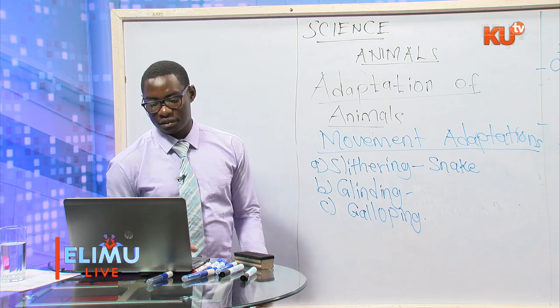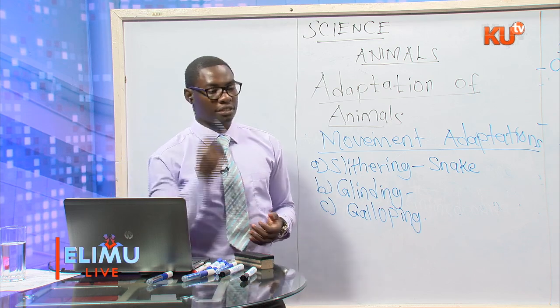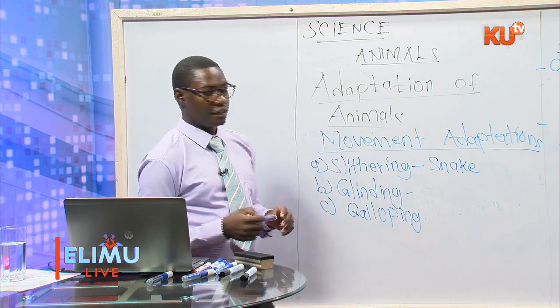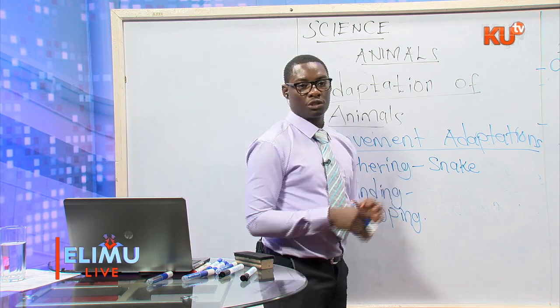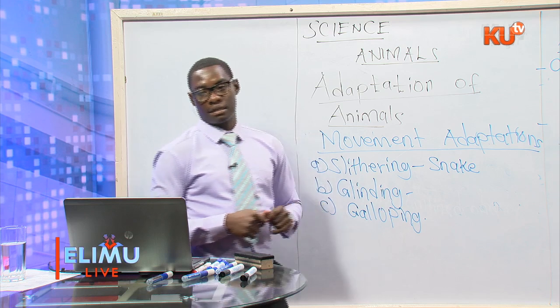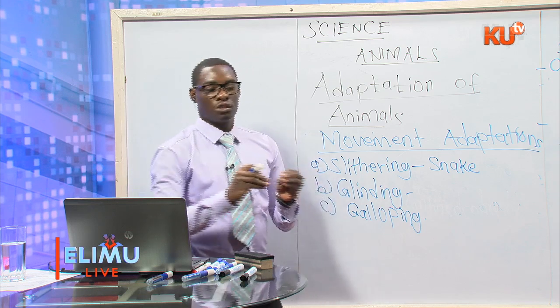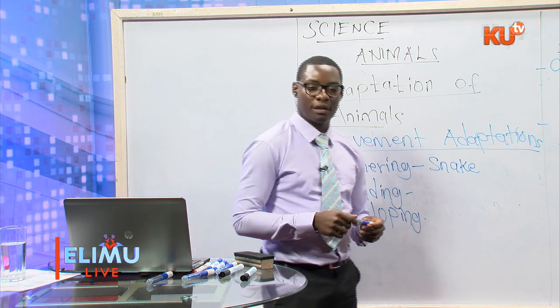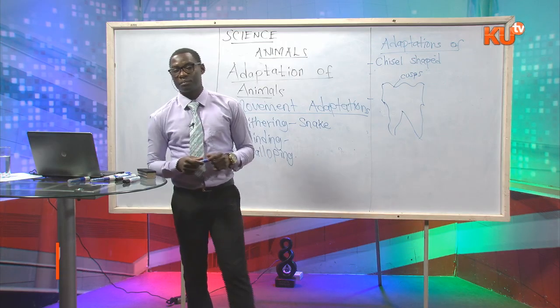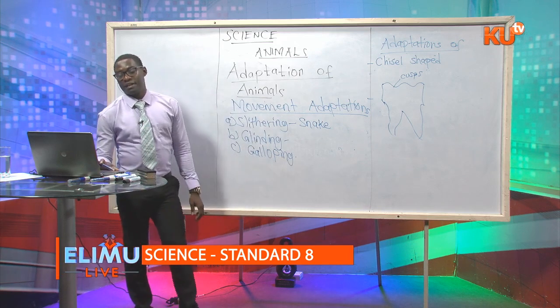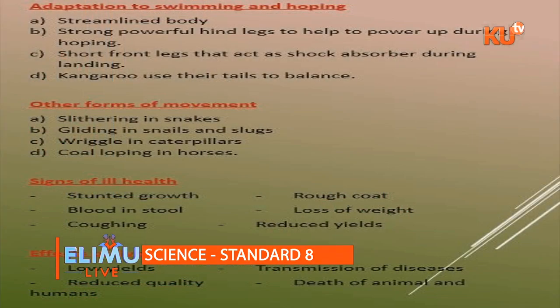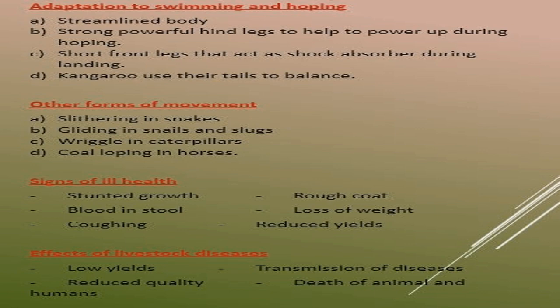Other effects include reduced quality of products — the product starts to depreciate in terms of quality. Then there is transmission of diseases: animals that are sick can transmit diseases to consumers. If you take meat from a sick animal and consume it, you are likely to get sick. The last effect is death — death of the animal, and also death of the person who has consumed the meat of a sick animal. So the four effects are: low yields, reduced quality, transmission of diseases, and death.